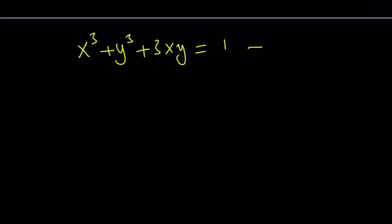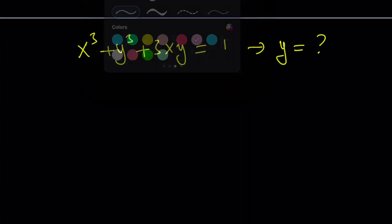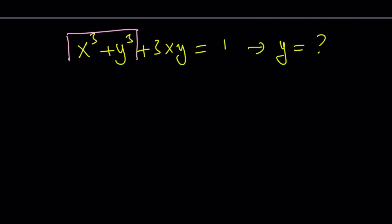So, I'm going to rewrite the original problem. It is x cubed plus y cubed plus 3xy equals 1. And we're supposed to find the y value in terms of x. And x does not equal negative 1. So, let's see what we can do. First of all, x cubed plus y cubed is a sum of two cubes. So, we can go ahead and factor this.